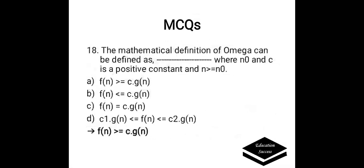The mathematical definition of omega can be defined as dash, where n0 and c is a positive constant and n is greater than n0. Options: a) f(n) >= c*g(n), b) f(n) <= c*g(n), c) f(n) = c*g(n), or d) c1*g(n) <= f(n) <= c2*g(n). Correct answer is f(n) >= c*g(n). The mathematical definition of omega is: f(n) is always greater than or equal to c*g(n).